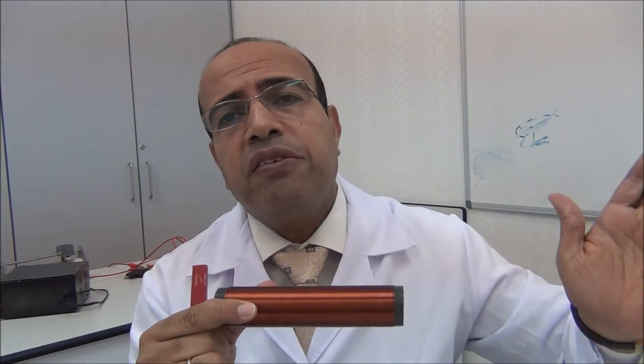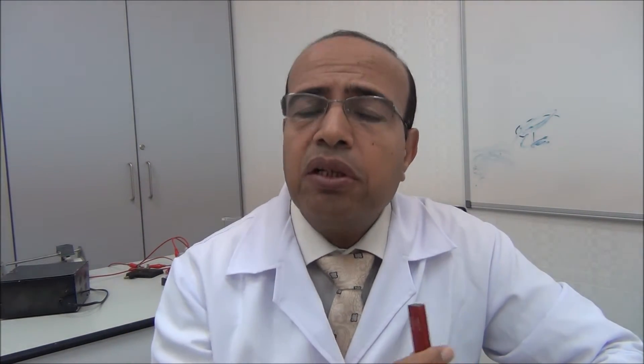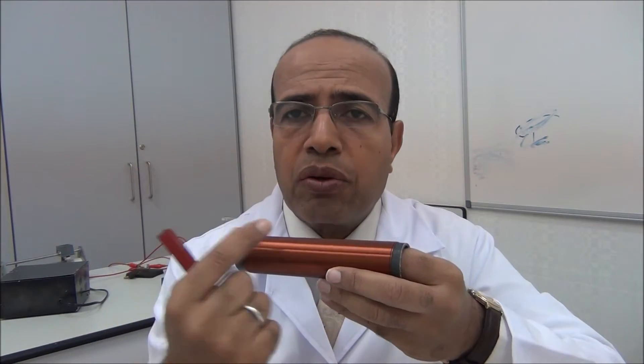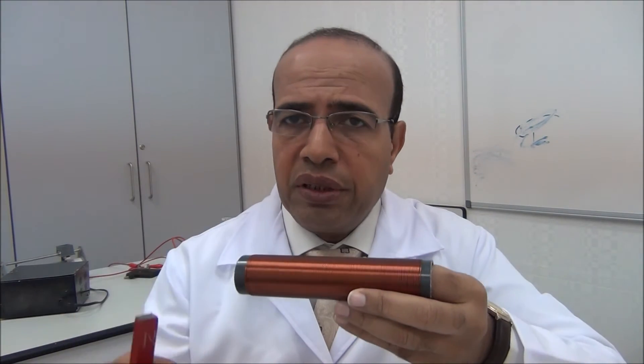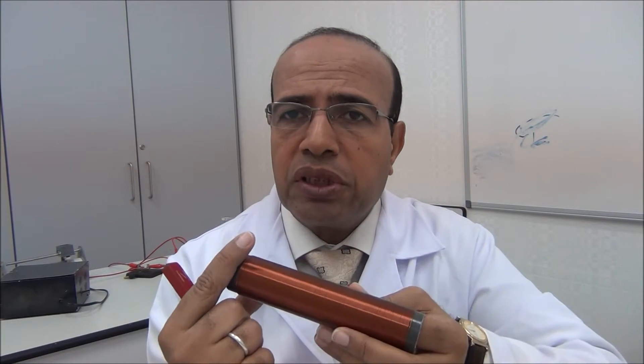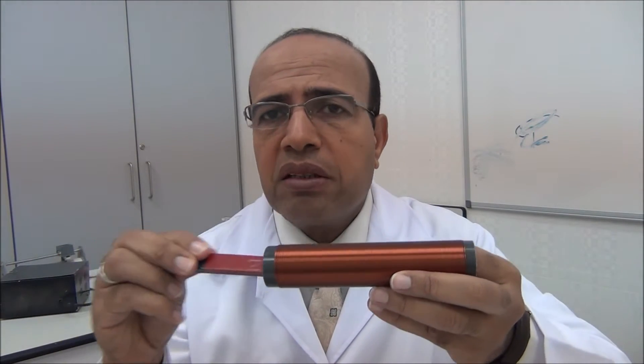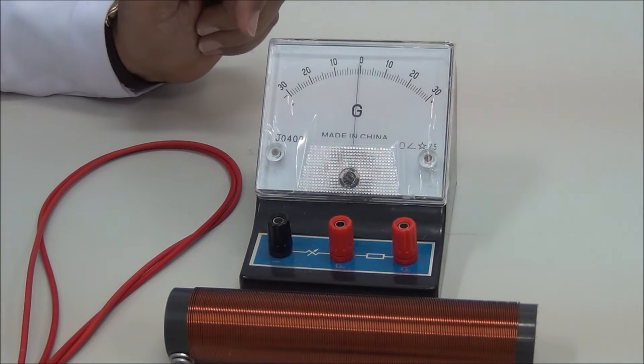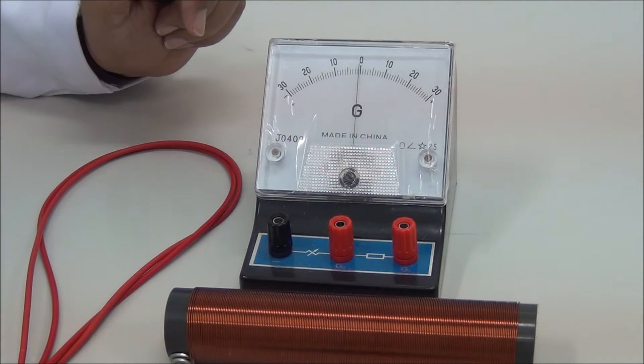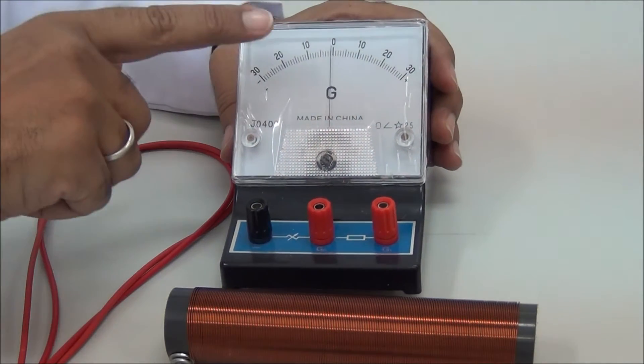That current makes a deflection in the galvanometer. This deflection depends on the magnet and on the coil. To increase the deflection, we use a stronger magnet with a coil of more turns, we increase the cross-sectional area, and we move the magnet faster. Now let us list the apparatus we need: a galvanometer.